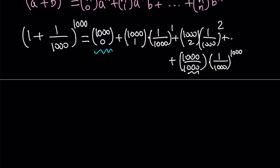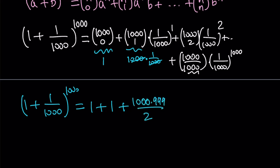1000 choose 0 is 1 because n choose 0 is always 1. 1000 choose 1 is 1000. But that is multiplied by 1 over 1000. So they're going to cancel out and that's going to leave us with 1. So 1 plus 1 over 1000 to the power 1000 is going to be 1 plus 1 plus. Now this term is going to be 1000 choose 2. So 1000 times 999 divided by 2 factorial multiply by 1 over 1000 squared. Obviously, one of these is going to cancel out and we're going to end up with 999 divided by 2000 plus some other terms. And at the end, we're going to have 1 over 1000 to the power 1000. As I said earlier, this is a very very small number.